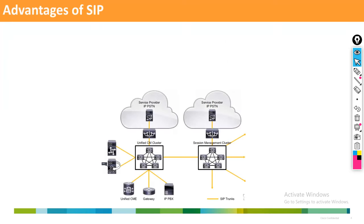Regarding which OSI layers SIP works on: SIP works at the application layer. In the OSI model, three layers — application, presentation, and session — are considered as one single layer in the TCP/IP model. In TCP/IP, which has four or five layers, those top three OSI layers are all treated as the application layer.